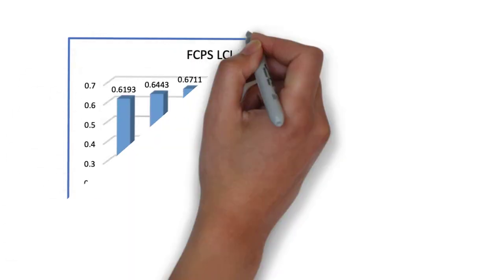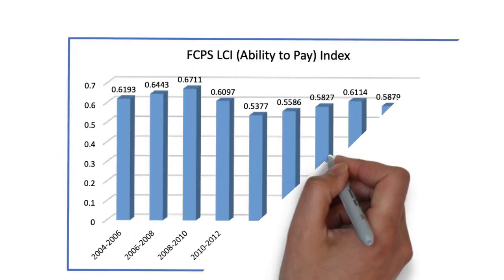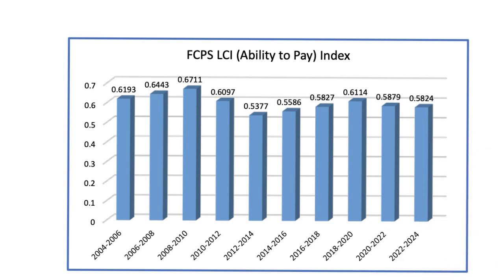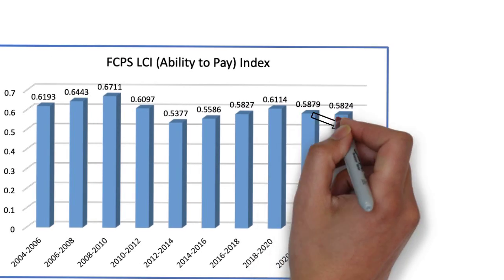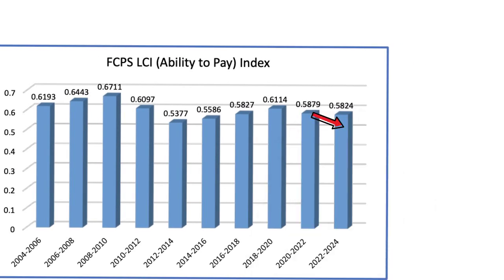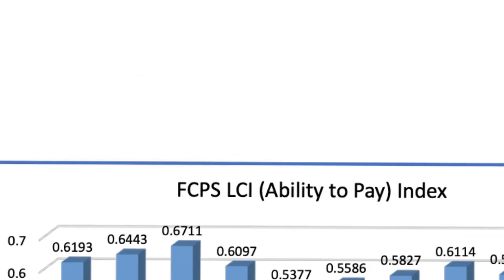The VRS rate is static, so we won't have to cover any increase there. All four state funding indicators went up, leading to more state money for our locality. And our LCI, which is our Local Composite Index of Ability to Pay, went down, providing us with approximately an additional $800,000 in state money.